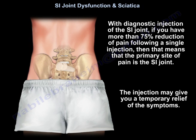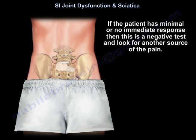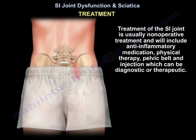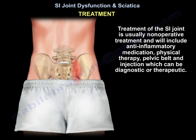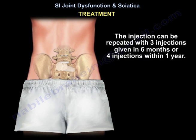The injection may provide temporary relief of symptoms. If the patient has minimal or no immediate response, then this is a negative test — look for another source of the pain. Treatment of SI joint pain is usually non-operative and will include anti-inflammatory medication, physiotherapy, pelvic belt, and injection which can be diagnostic or therapeutic. Injection gives about 60% success rate in pain relief at six months and can be repeated — three injections in six months or four in one year.